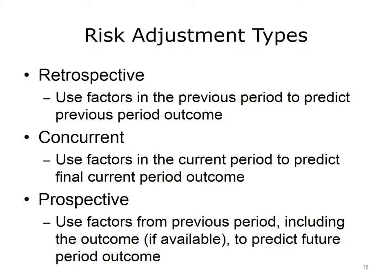There are three main types of risk adjustment worth noting. Retrospective risk adjustment uses factors in the previous period to predict previous period outcomes. Concurrent risk adjustment uses factors up through and into the current period to predict the final level of the current period, and can include the current level of the outcome of interest, though it is not yet completed. Prospective risk adjustment uses factors from the previous period, including the outcome if available, to predict future period outcomes. It's worth noting that some factors may not predict the future very well despite being good retrospective factors — for instance, the diagnosis of a broken leg is likely to affect retrospective and concurrent risk, but much less so the prospective risk, as most patients will not have ongoing care if a broken leg is able to heal properly.